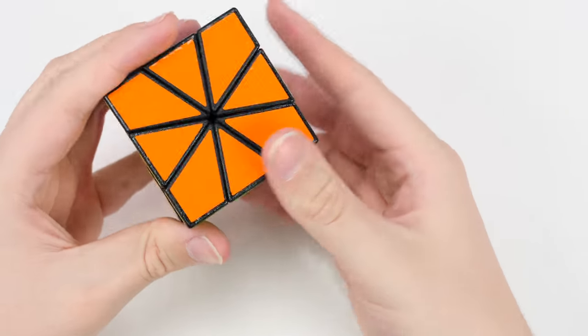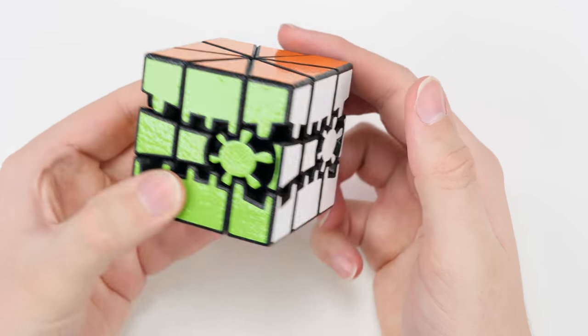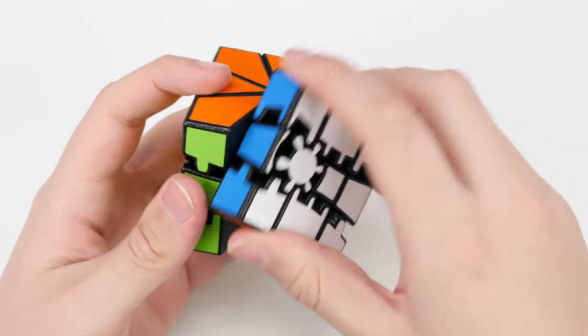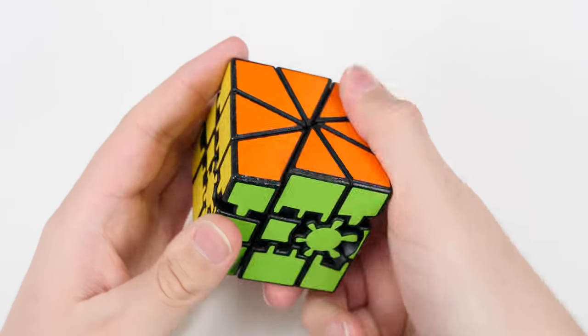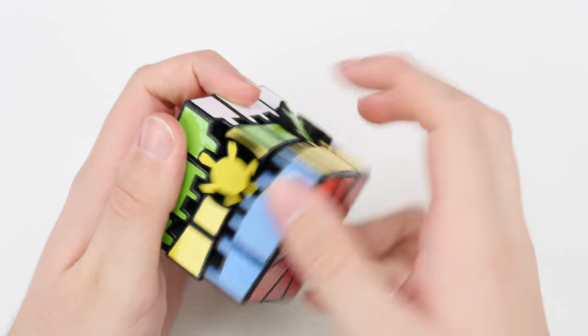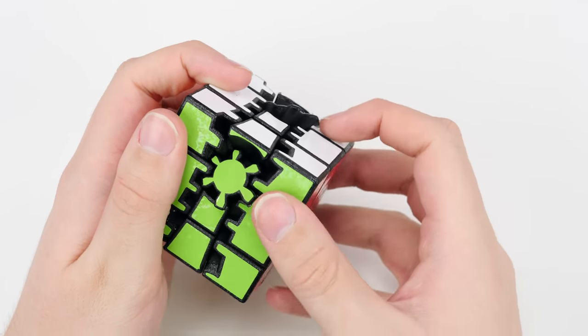There's a little bit of catching because of the interference from the slice layers. That's something I experience on normal square ones as well. The slice turns are a little bit more stiff. Those require a bit of force. But then these layers here when everything is lined up are very very smooth.